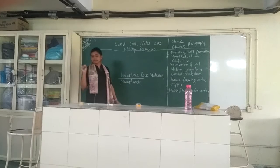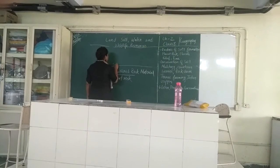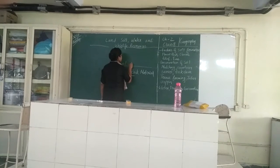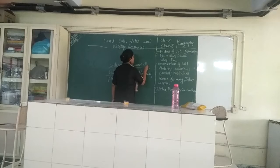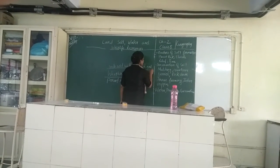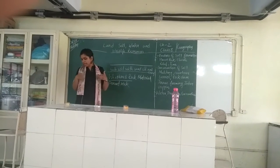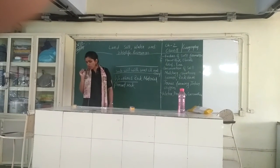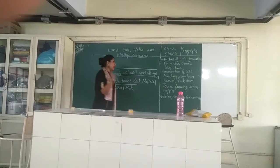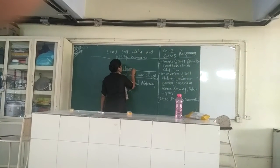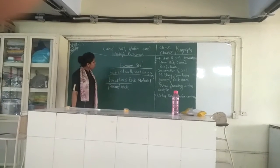Then it becomes subsoil with sand, silt, and clay. After that, when you add humus to it, it becomes the topsoil with humus — best for farming. That is the humus soil. This is how our whole soil comes to be.